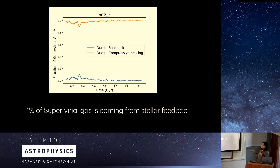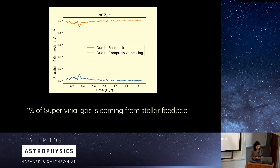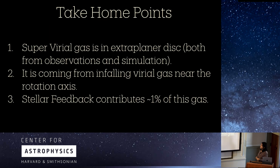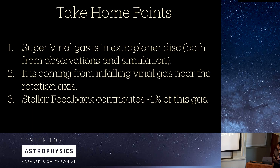We also tracked how much super virial gas comes from stellar feedback, and we find that only about one percent does. The take-home points are: super virial gas is in the extraplanar disk, confirmed by both observations and simulations; it originates from infalling virial gas near the rotation axis; and stellar feedback contributes only one percent of this gas.